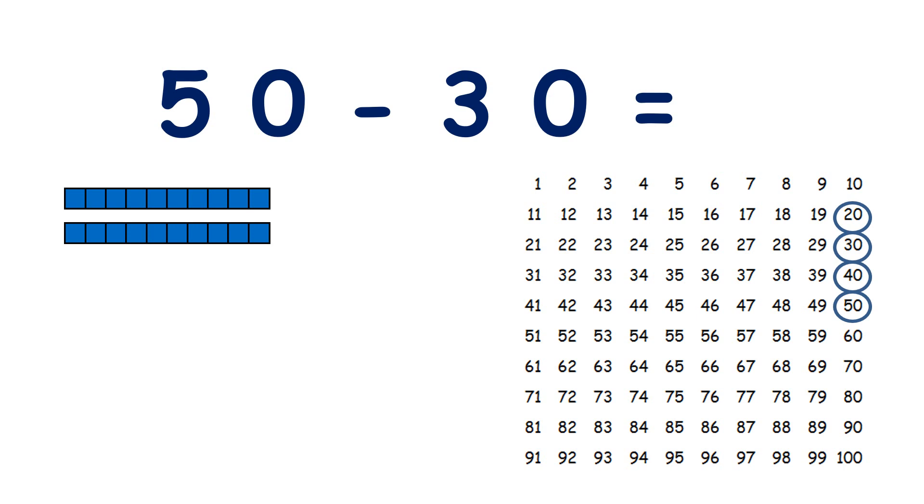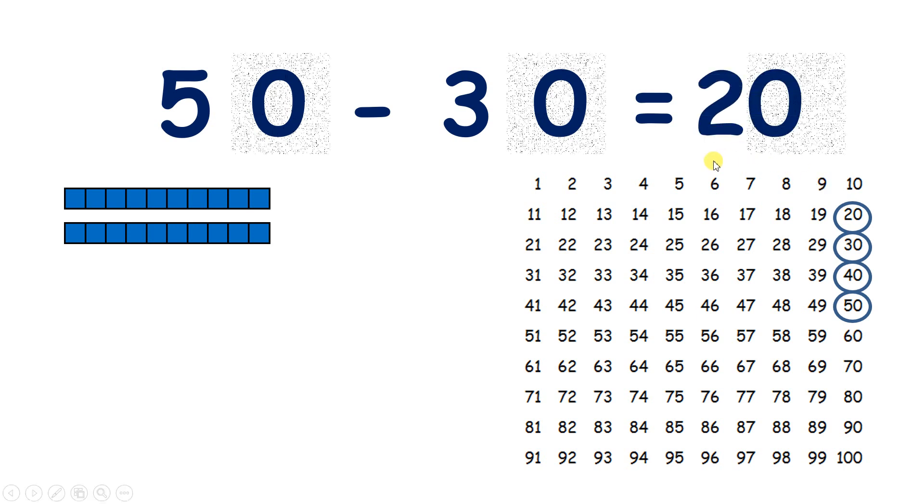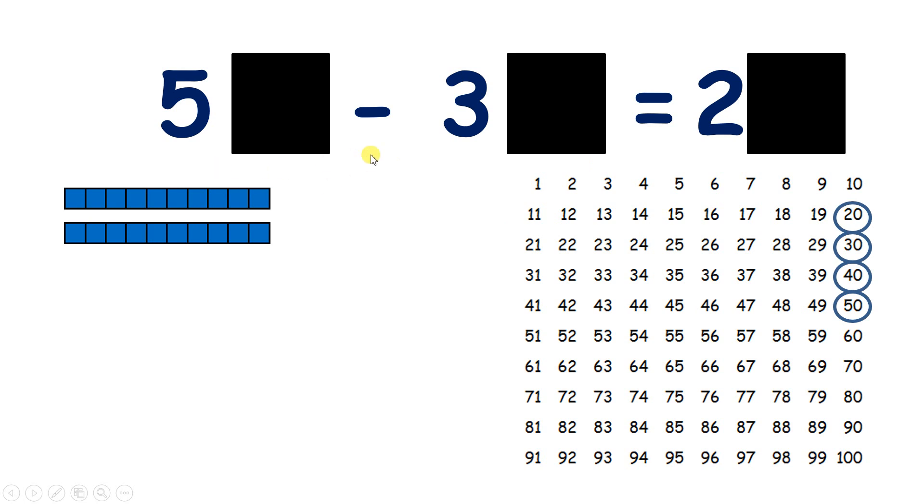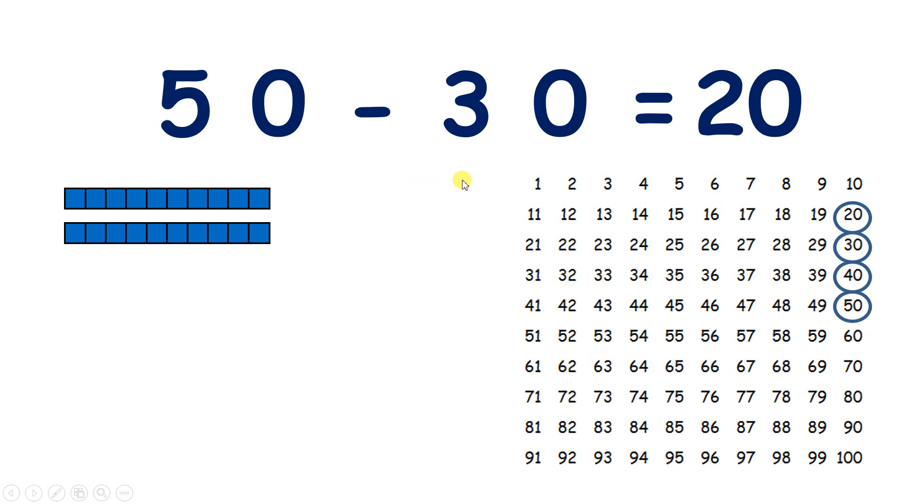So 50 subtracting 30 is 20. And if we know that five take away three tens, we know that five tens take away three tens leaves us with two tens, or 20.